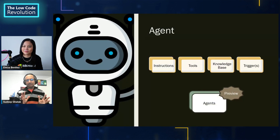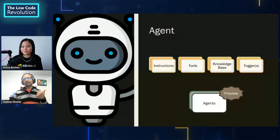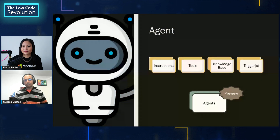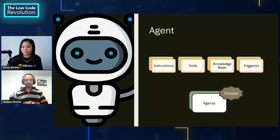We'll now look at some of the key features of an agent — I'll be building one using Copilot Studio. Think of training an agent like training a new employee. First, they need good instructions — what they are and aren't supposed to do. Second, they need tools, just like you'd provide a laptop or phone to an employee. Third, the agent may have access to a knowledge base to check information before taking action. Fourth, they are triggered by an event. And finally, a new preview feature in Copilot Studio lets agents talk to one another.